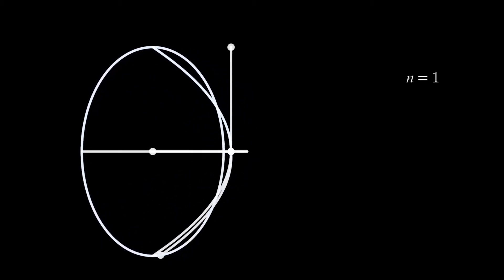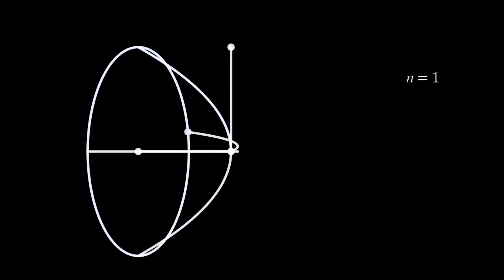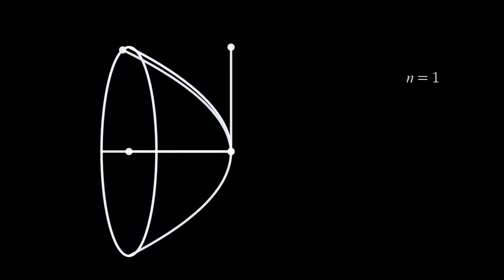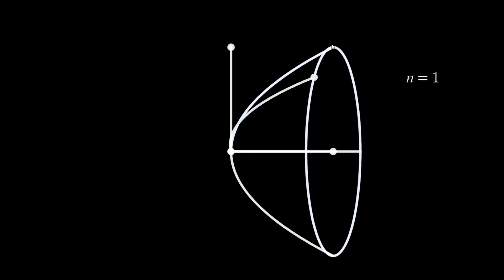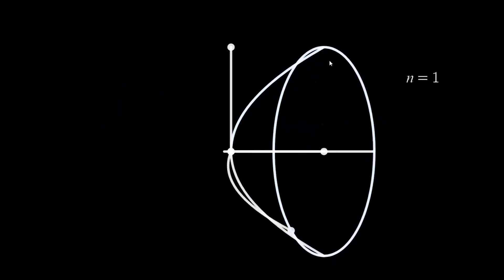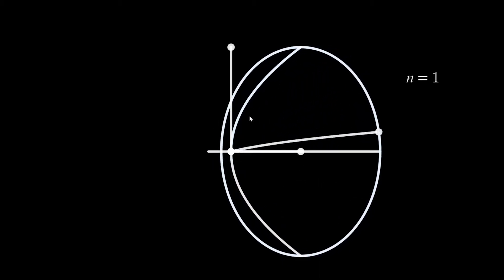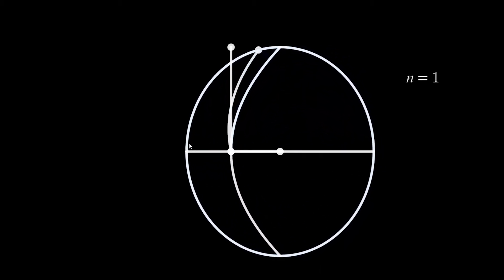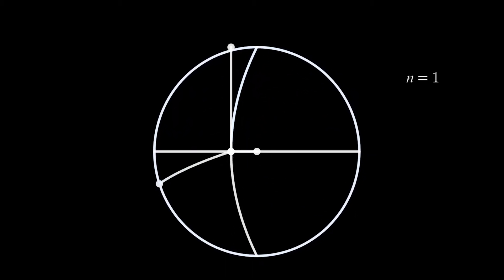Why does it look like a cone? Because this is a curve, so the radius eventually decreases along the line. The outermost part has the longest radius, but as we go inward, we have a smaller radius. This is why we have the shape of a cone.